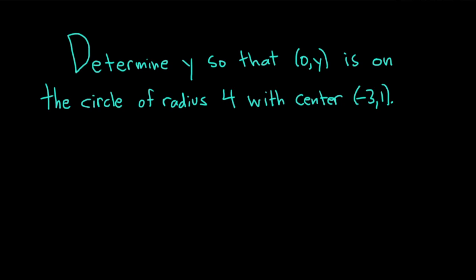Hi, in this problem we have to determine y so that the ordered pair (0, y) is on the circle of radius 4 with center (-3, 1). Let's go ahead and work through it. This should be fairly simple.